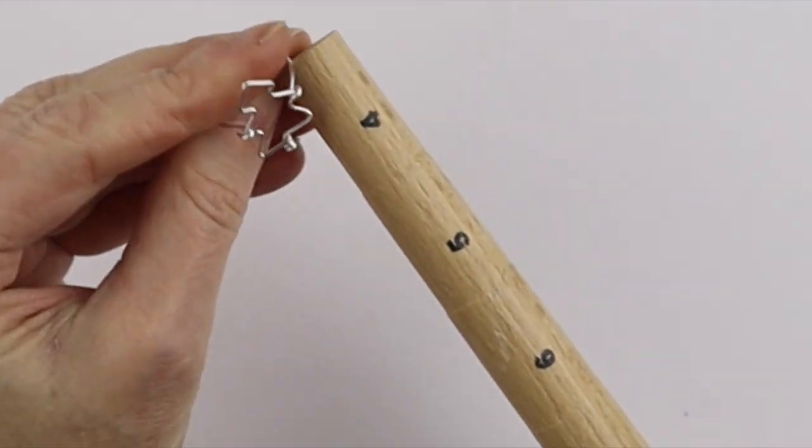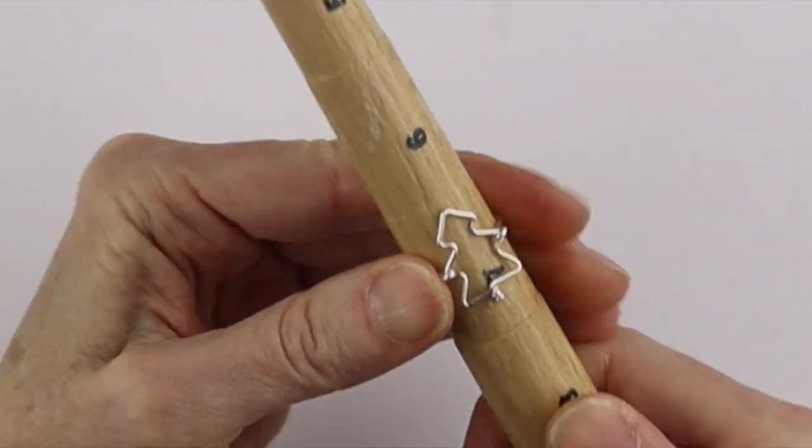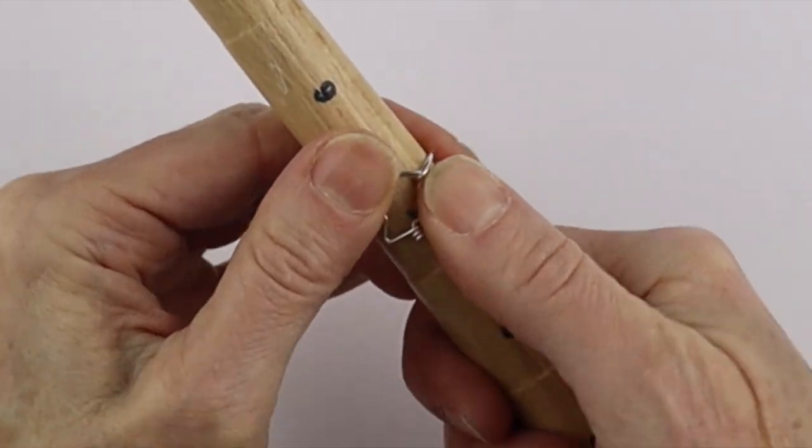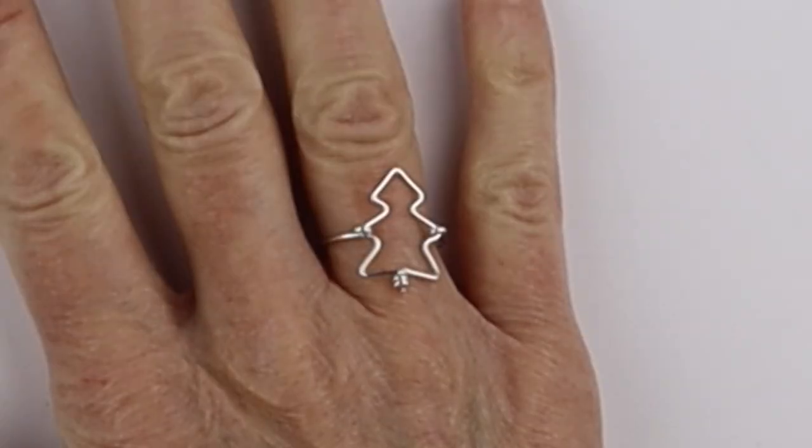And then I always like to put it back on the ring cone. Just to shape it a little bit. If you have to kind of push it around. So there you have your super simple Christmas tree ring. And you can add beads if you like.